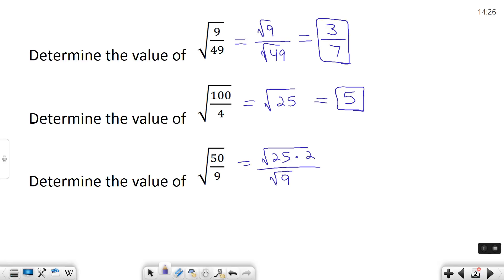The reason that I can do that and why it helps is because now I can split these two, 25 and 2, into separate square roots. Square root 25 times square root 2 over square root 9.